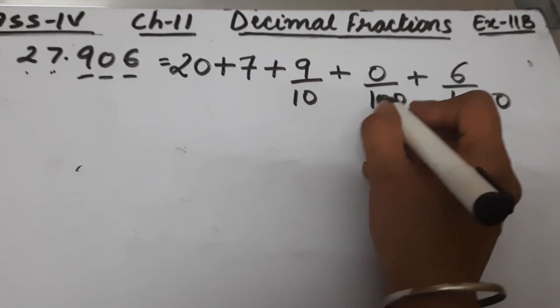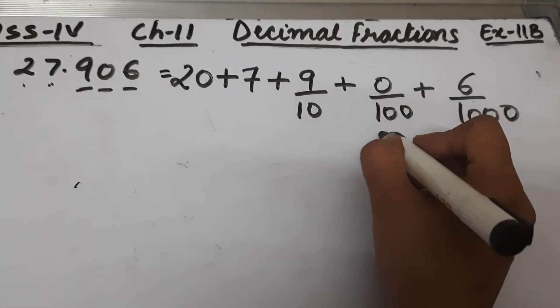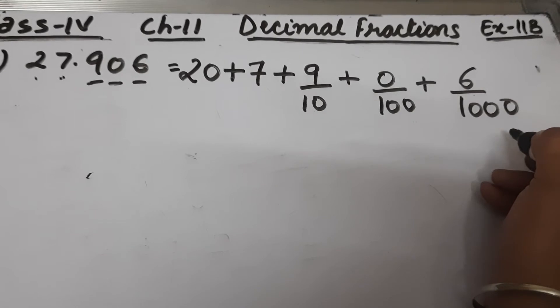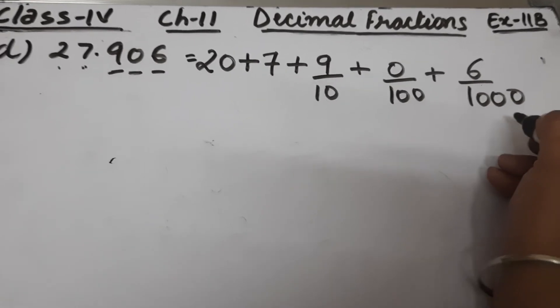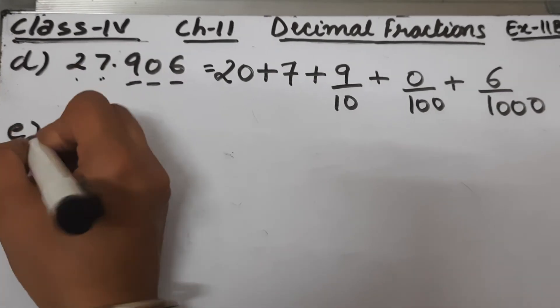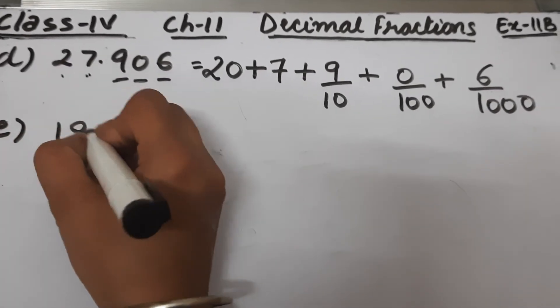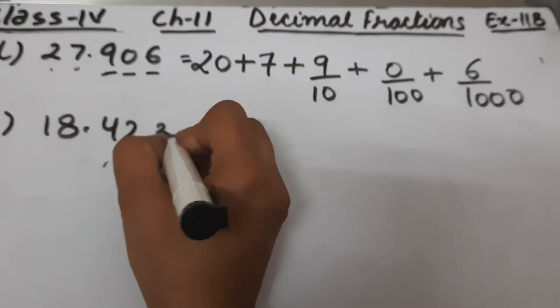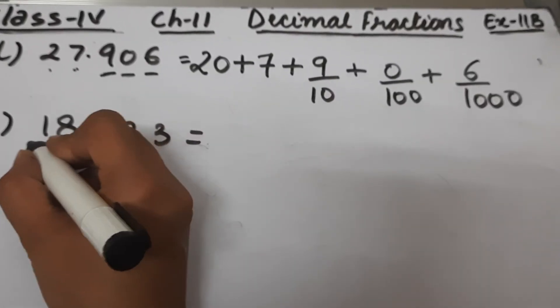So the expanded form of 27.906 is: 20 plus 7 plus 9 by 10 plus 0 by 100 plus 6 by 1000.